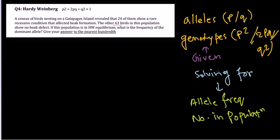The answer is usually at the decimal level because that's what frequency tells us. If you are given alleles, you use p and q only. If you are given a genotype, it can be p² or q² — since for dominant homozygous it is p², for recessive homozygous it is q², and for heterozygous it is 2pq.